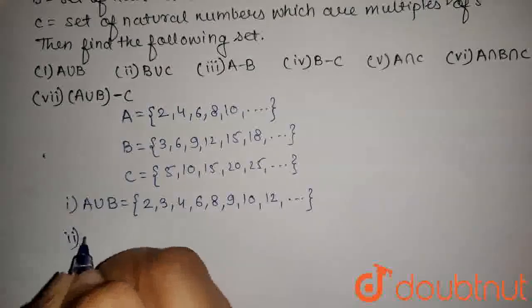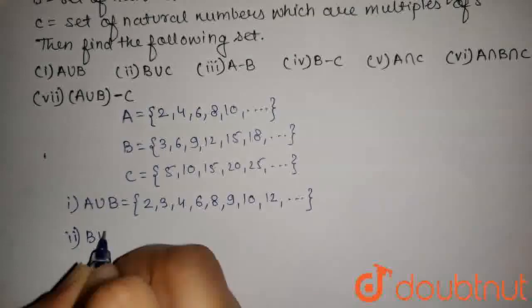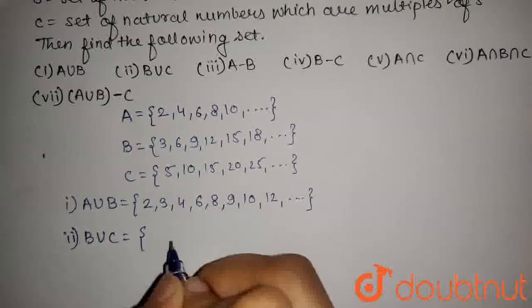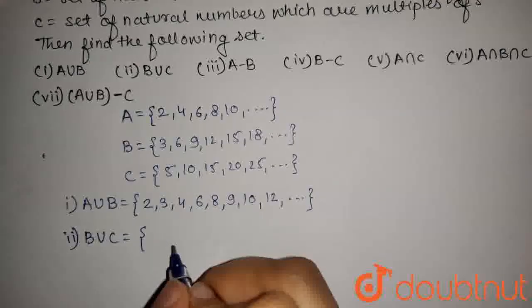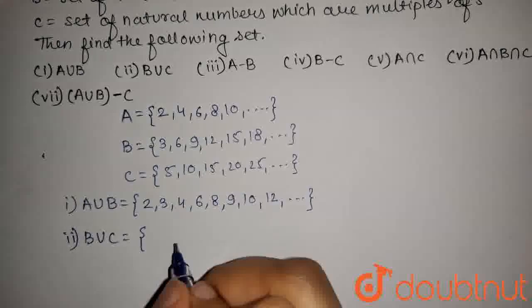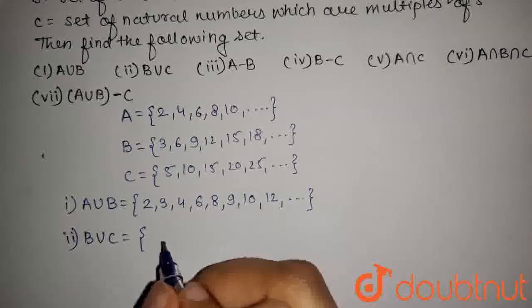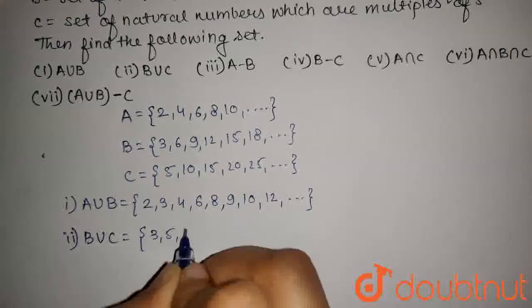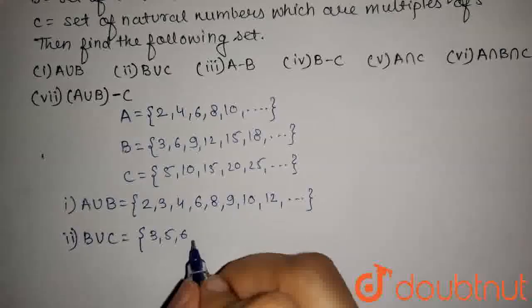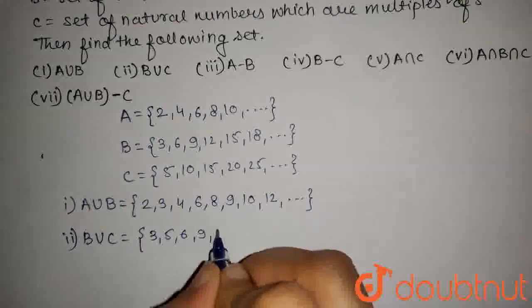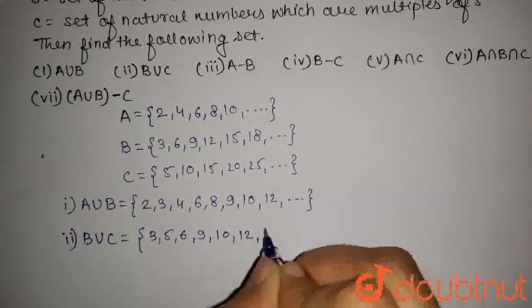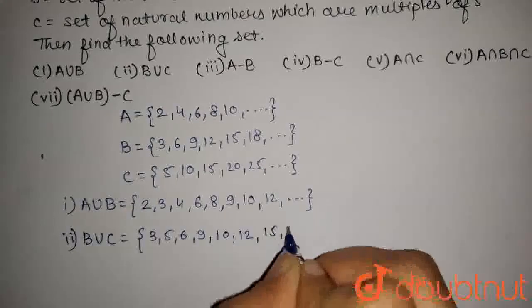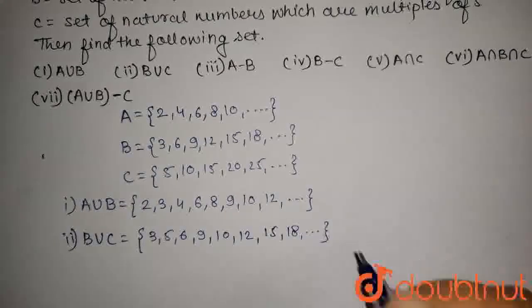The second part is to find B union C. B union C will contain natural numbers which are multiples of 3 or 5. So this set will contain 3, 5, 6, 9, 10, 12, 15, 18, and so on.